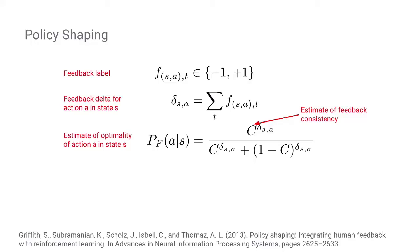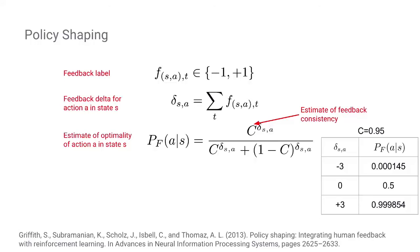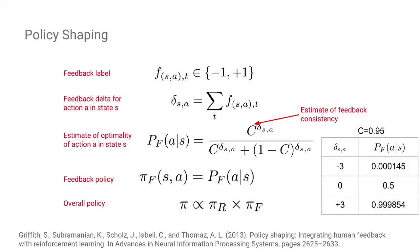The delta for a state-action pair is computed, and there is a formulation for estimating how optimal the feedback is for a given state, where C is an estimate of consistency of the feedback. For high scores of C, we trust the user's feedback to be consistent with the optimal policy. For example, for C equal to 0.95, if delta is zero the formula gives 0.5; if delta is minus three it gives a really low value; and if delta is plus three, a really high value. We use this as an additional policy: initially with no feedback the agent depends on the reward policy, and as it accumulates feedback the feedback policy shapes the agent's behavior.